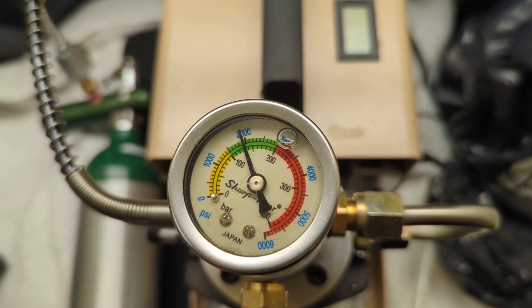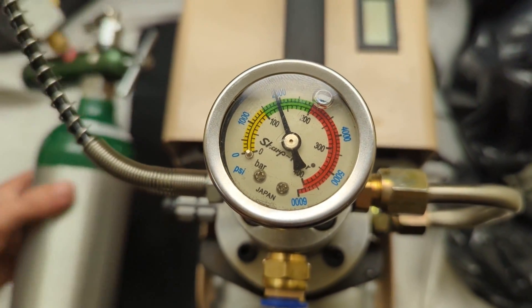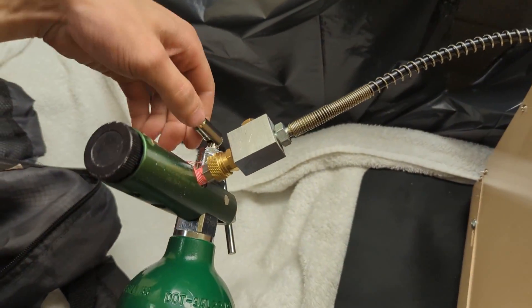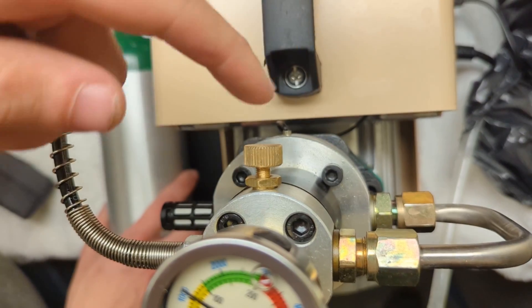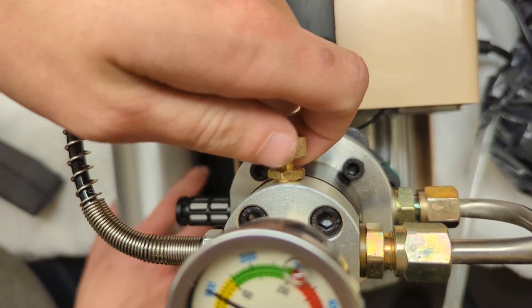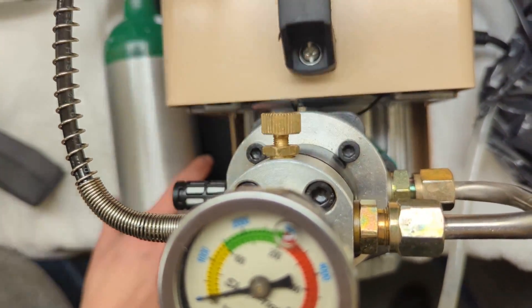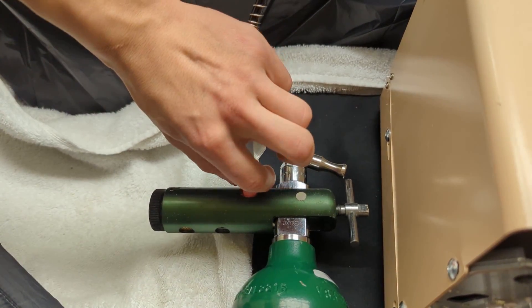We've reached 2,000 psi and that's as much as you can pressurize oxygen tanks. So what we're going to do now is we're going to close the valve at the top of the oxygen tank. Right here there's a pressure release valve and we're just going to open that and that will release all the pressure in the line and now it's safe to remove the fitting from the oxygen tank.